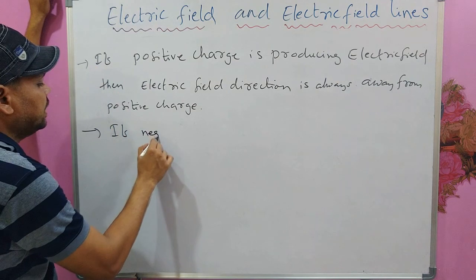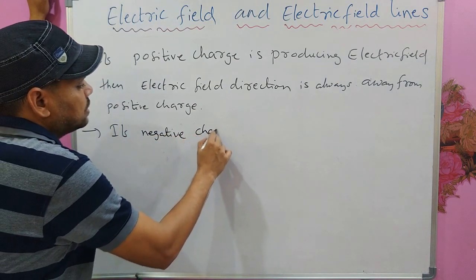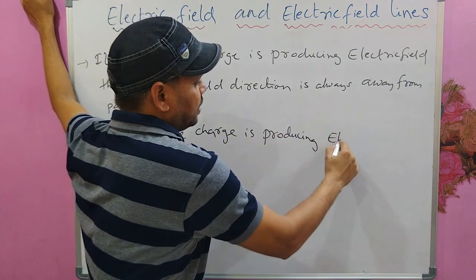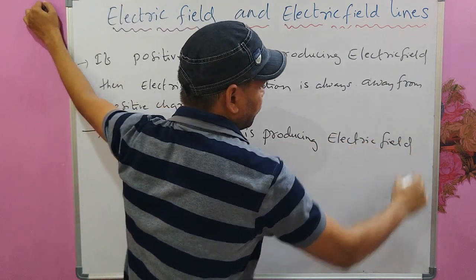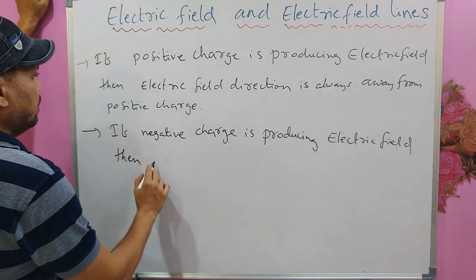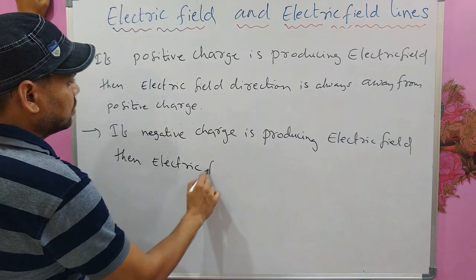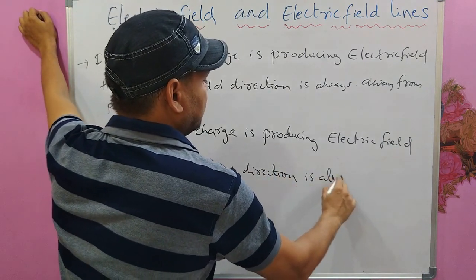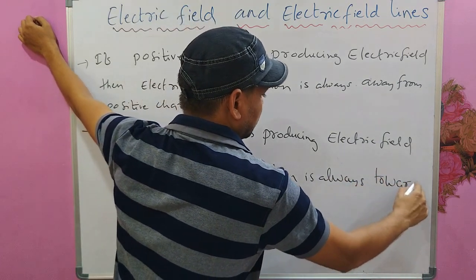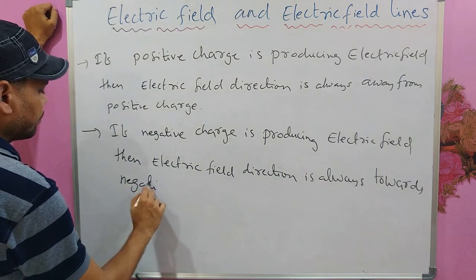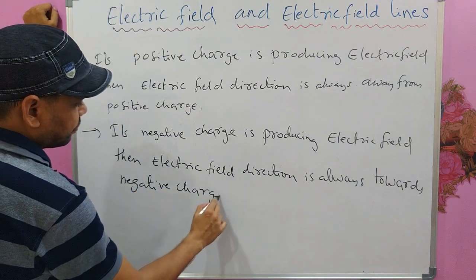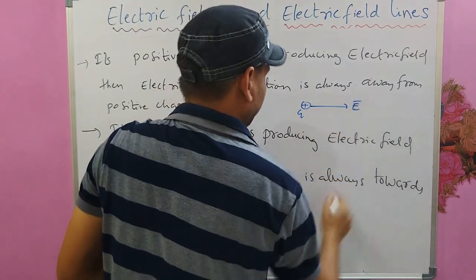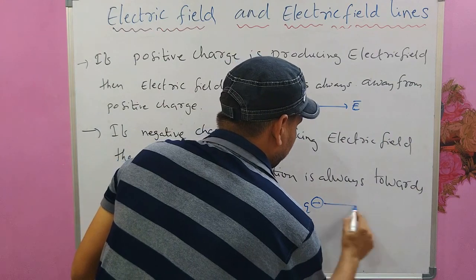Similarly, any type of charge can produce electric field. If a negative charge is producing electric field, then the electric field direction is always towards the negative charge. So if this is plus Q, the electric field produced by it goes outward; if this is minus Q, the electric field produced by it points inward.